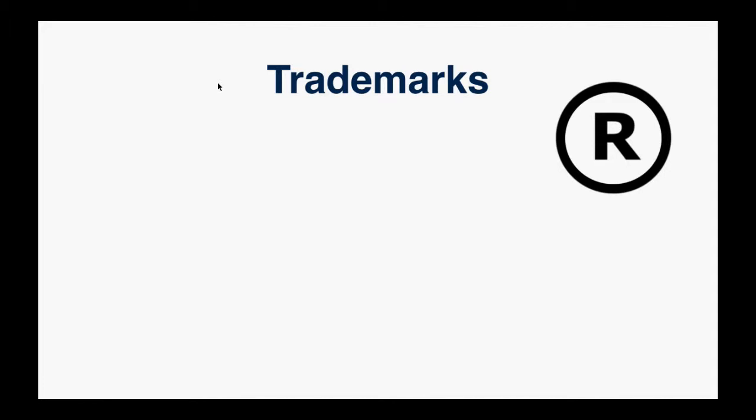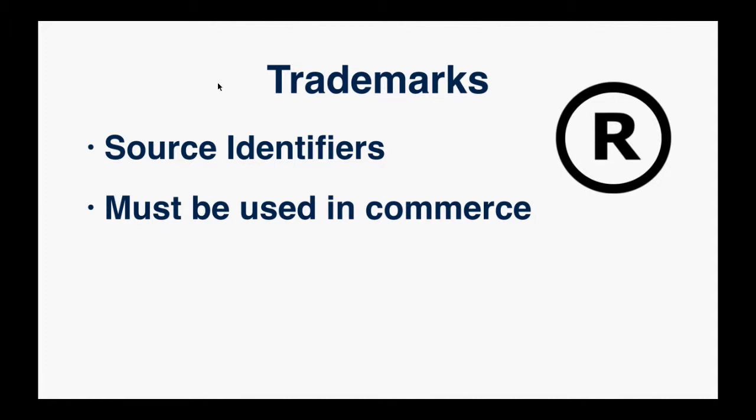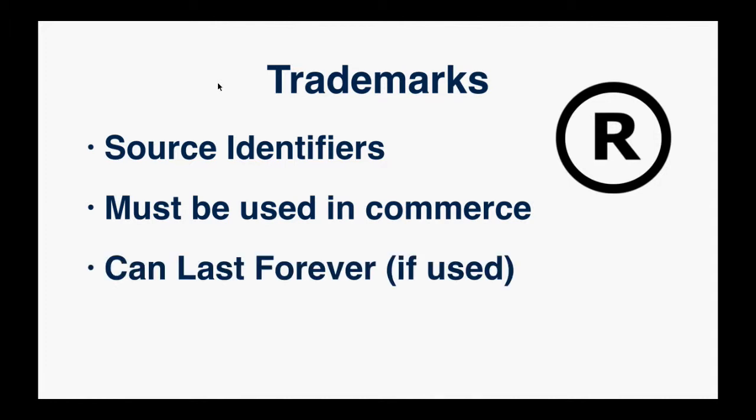Trademarks are source identifiers. When somebody's buying a product or service and they see a trademark, they know from experience whether they had a good time and whether it's something they want to purchase. It has to be used in commerce — you cannot go and buy a bunch of trademarks, sit on them, and then say to a company like Procter & Gamble that they have to buy them. You actually have to use it legitimately and prove that to the trademark office. They can last forever as long as you're using them — here at the Eureka Ranch we've had marks for over 20 years and every couple of years we have to prove we're still using them.